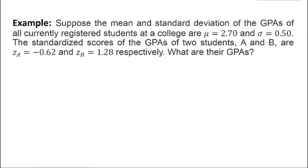Next, let's consider another example focusing on standardization. Suppose we know the mean and standard deviation of the GPAs of all students in a college, which is a population. Moreover, we are given the standardized scores of two students, A and B. So, now we want to know the actual scores of the two students.